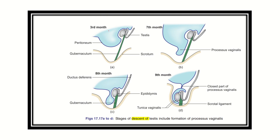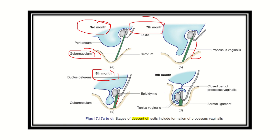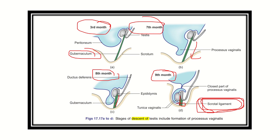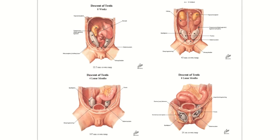During the third month the gubernaculum is long, in the seventh month it is shortening, in the eighth month it is more short, and in the ninth month the testes descend into the scrotum. The gubernaculum finally converts into the scrotal ligament. The gubernaculum is very important for the descent of the testes.